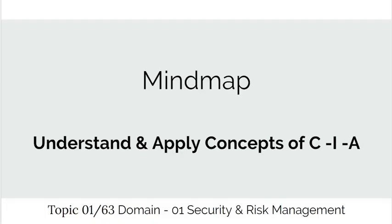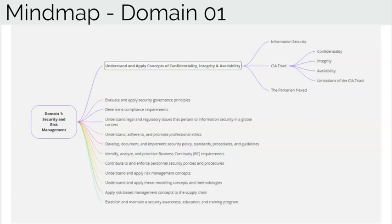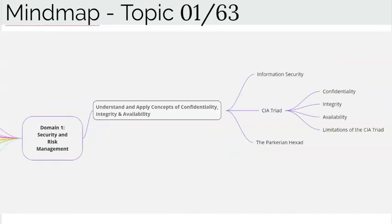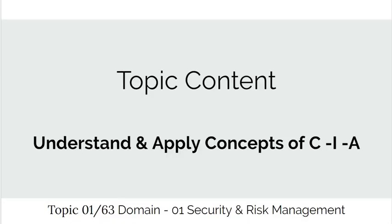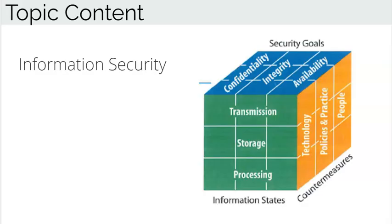Let's look at the mind map of this domain and topic. Domain 1 of CISSP has 12 topics in total. The first topic — Understand and Apply Concept of Confidentiality, Integrity, and Availability — can be further divided into subtopics: Information Security, the CIA Triad, and the Parkerian Hexad. You should also know the limitations and the negative of the CIA Triad.